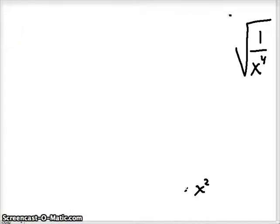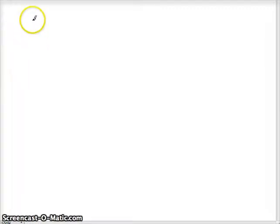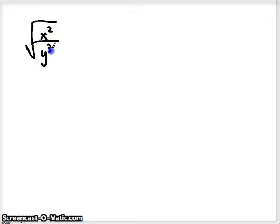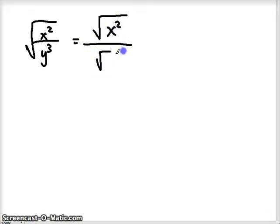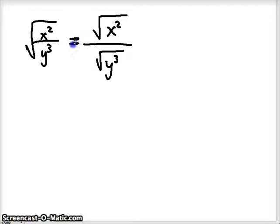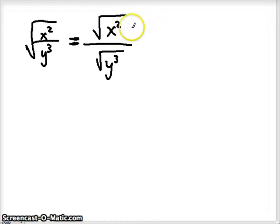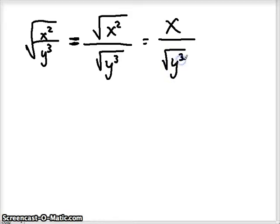Let's try another example: x squared over y to the 3rd, all under one square root. Let's break it up using the quotient property: the square root of x squared over the square root of y to the 3rd. On top, the square root of x squared is just x. And we still have the square root of y to the 3rd on the bottom.